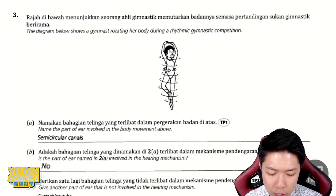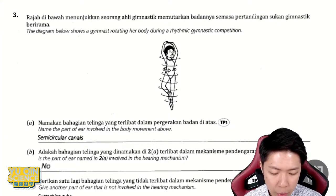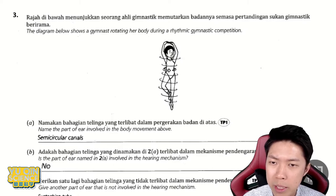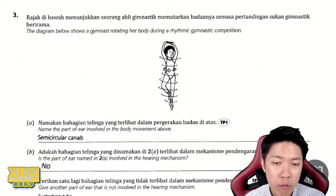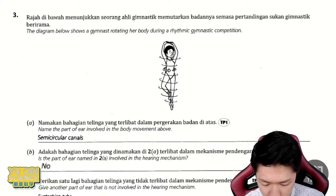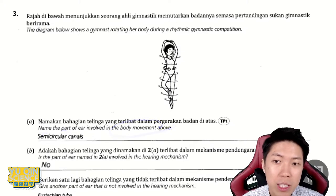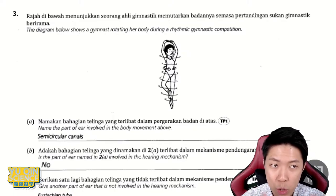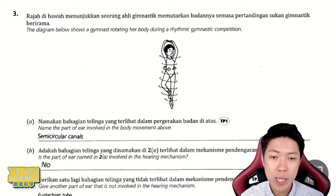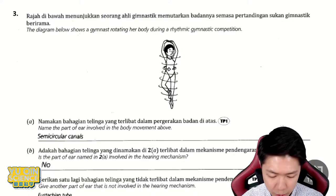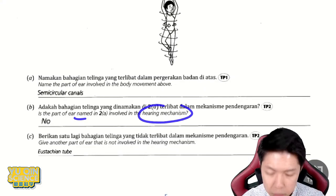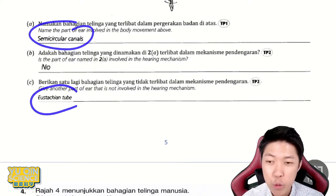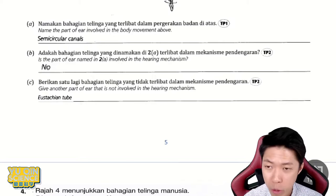Question three shows a gymnast rotating her body during a rhythmic gymnastics competition. The question is: name the part involved in the movement. This kind of movement requires balance, so the part that controls body balance and knows the position of the head is the semicircular canal. Is it involved in hearing? No — there are two parts not involved in hearing: semicircular canal and eustachian tube.